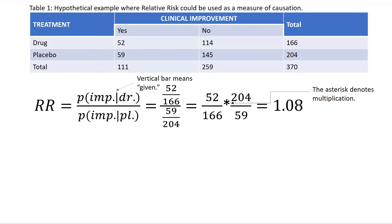Notice here that the numerator is not the probability of disease given exposure, but rather the probability of improvement given drug administration. In this case, the exposure variable is actually a treatment variable — whether the patient is exposed to a drug or a placebo. And we're not looking at a disease, but rather improvement. But mathematically, this is modeled exactly the same way, and this is a very common application of relative risk.